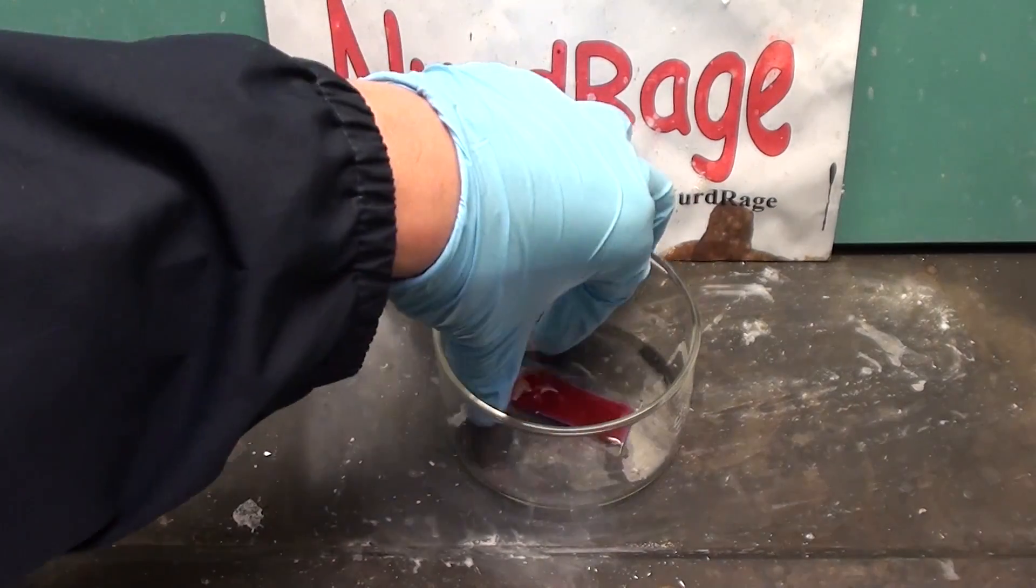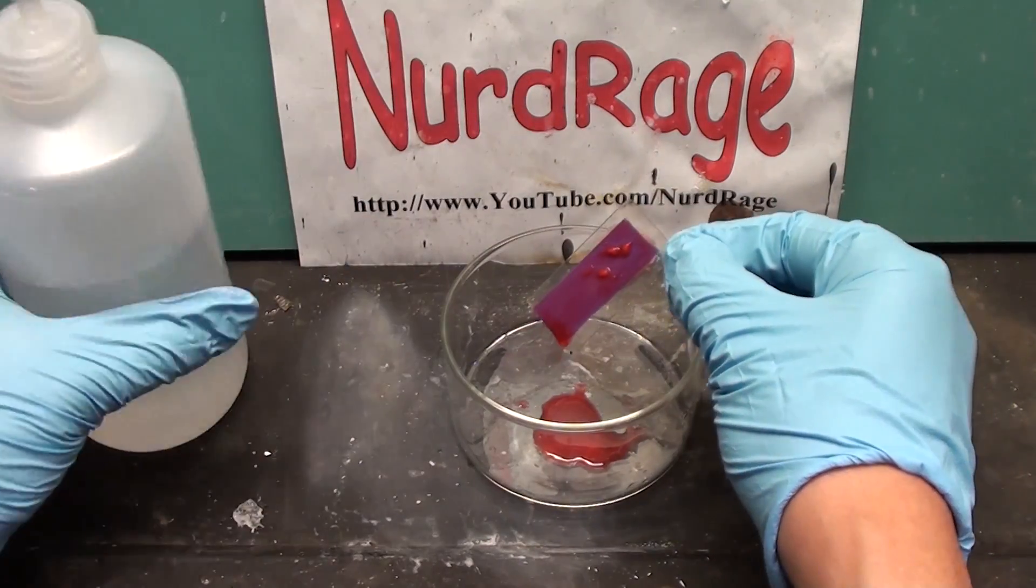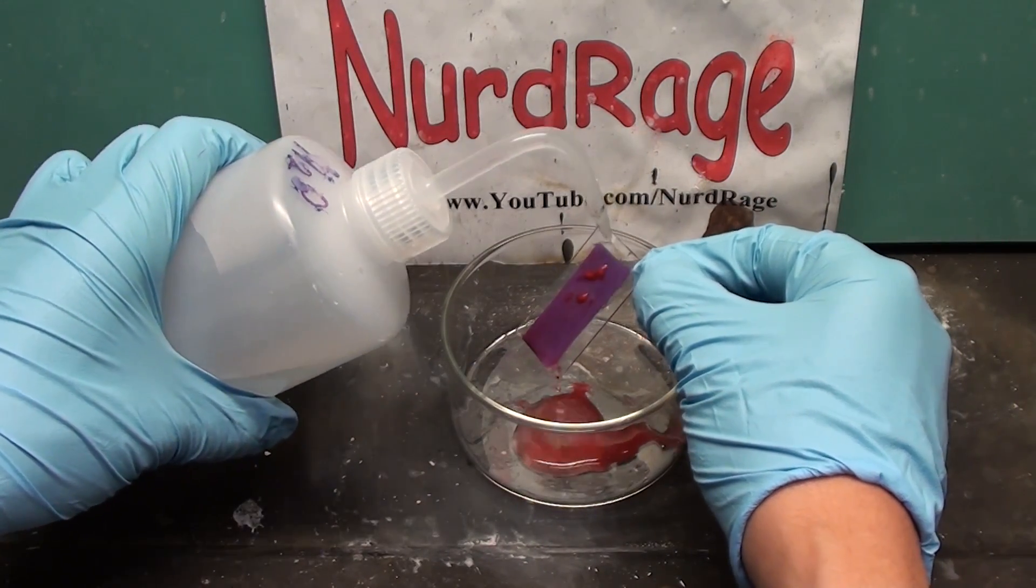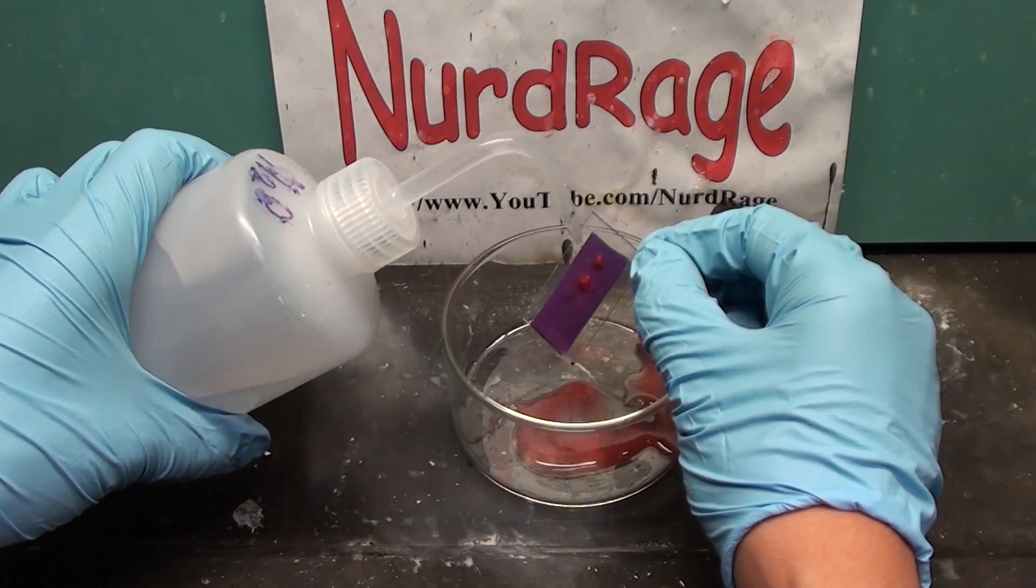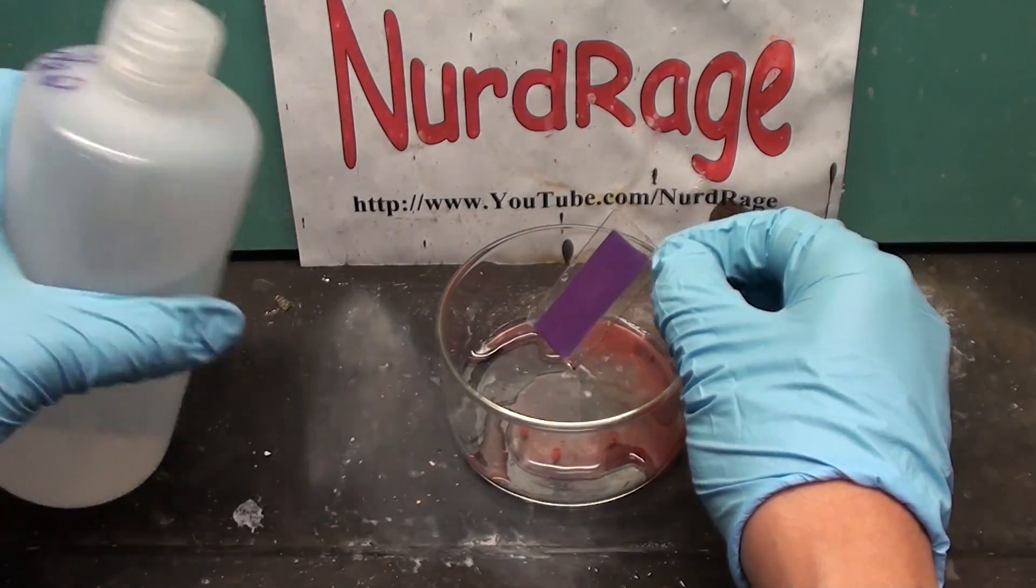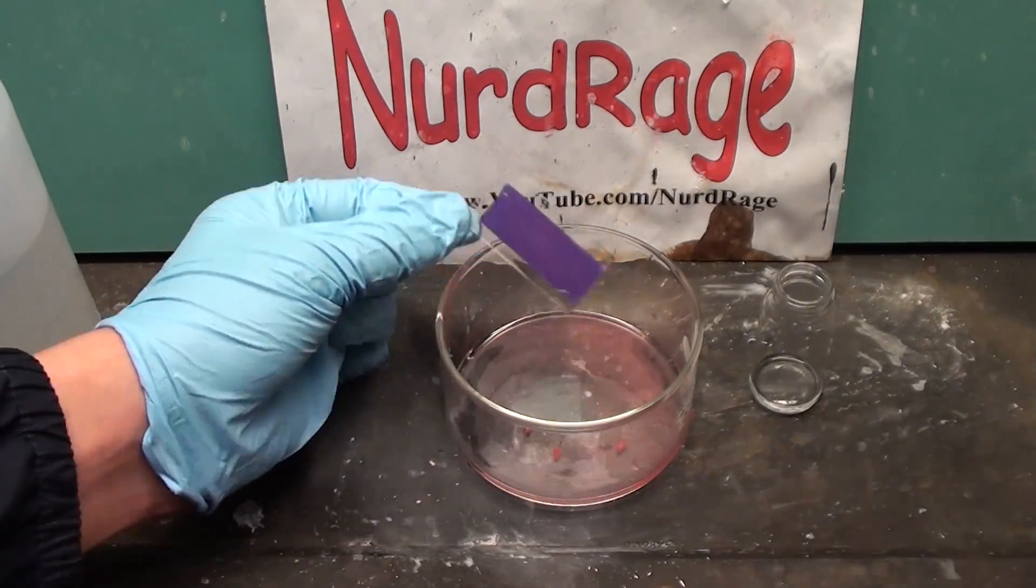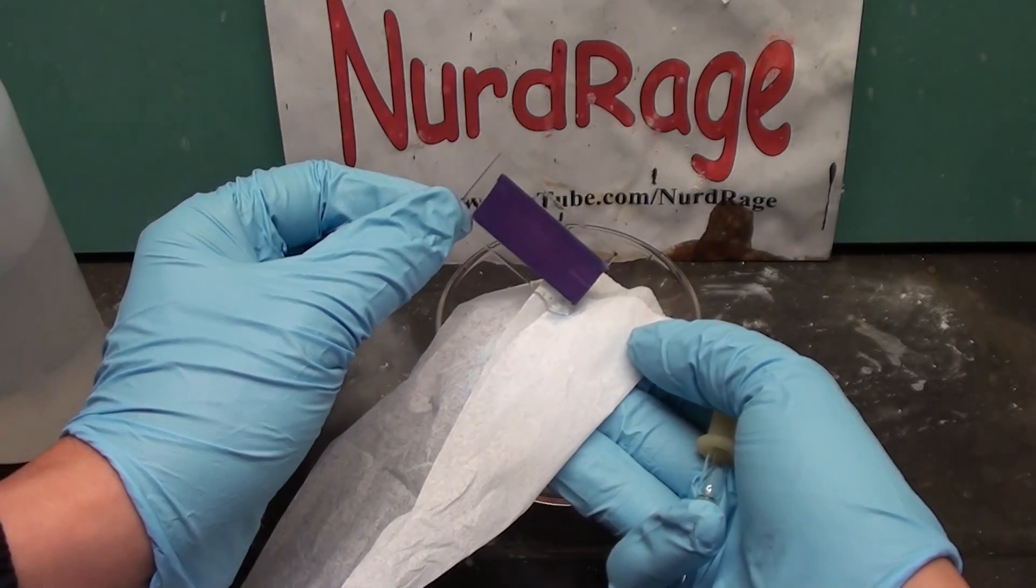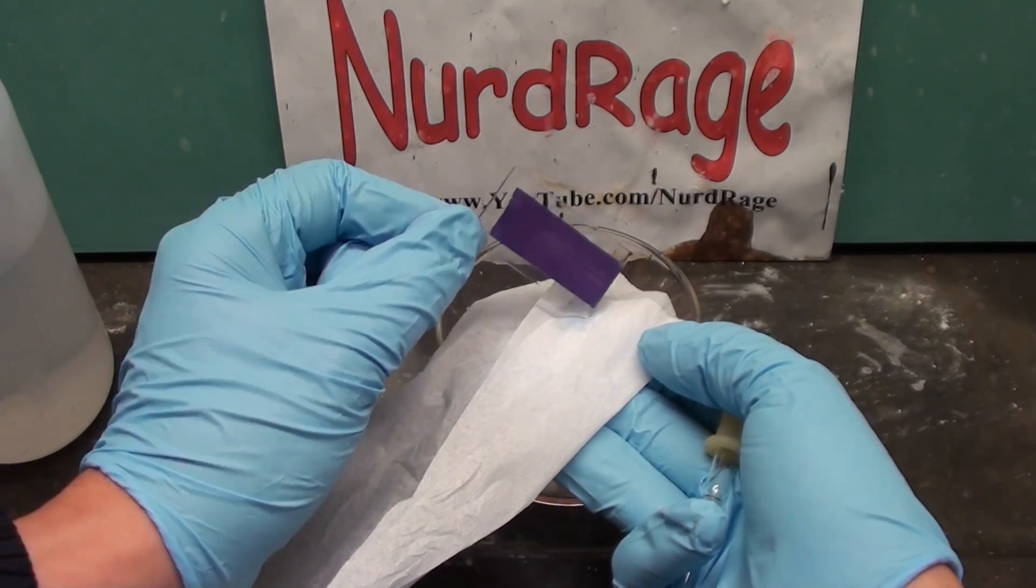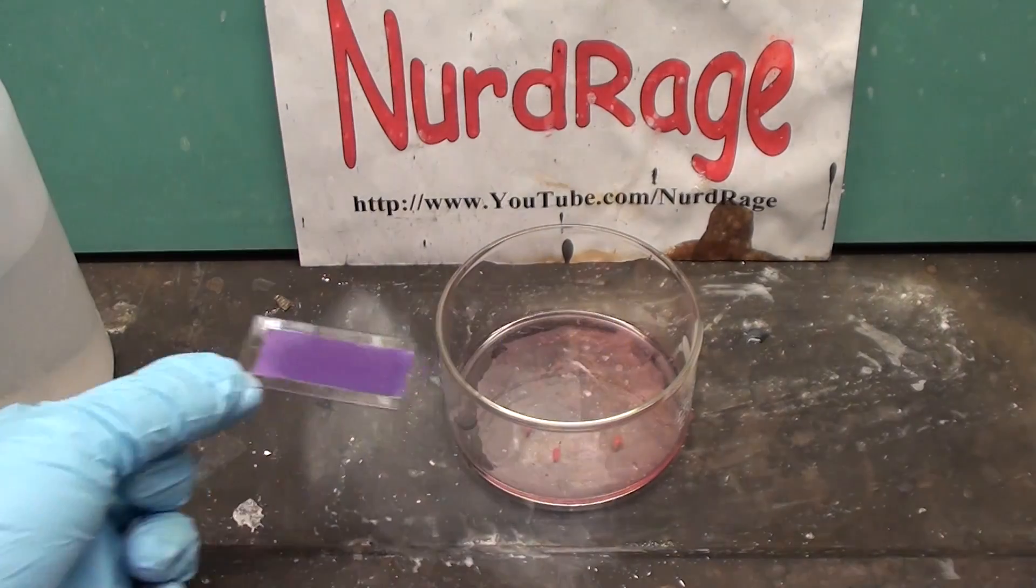Now carefully rinse off the extra raspberry juice and bits of crushed raspberries with water. Be gentle as the titanium dioxide is very delicate. As you can see the titanium dioxide is dyed purple from the anthocyanins. Now carefully wash the titanium dioxide with ethanol to remove additional raspberry chemicals. And here is the dyed titanium dioxide. Carefully dab away extra fluid. Now let the slide dry on air.